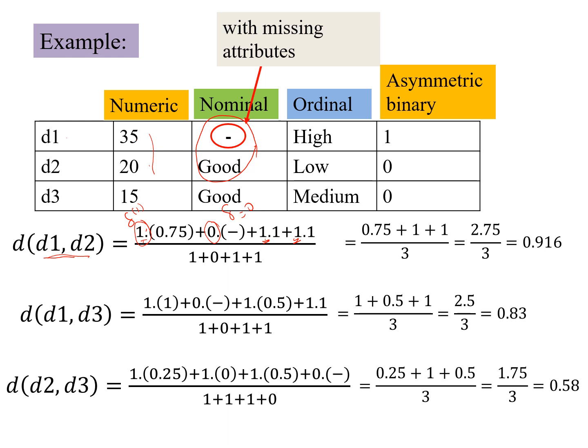So these are the delta values. Now we sum up the delta values in the denominator. So this 1 is here, this 0 comes here, and 1 and 1. And this 0.75, is nothing but the numeric, 35 minus 20, divided by the 35 minus 15, because that is the max and min. So we have 0.75, which is a very simple example. So you can check the computations yourself. So our value comes to 0.916.